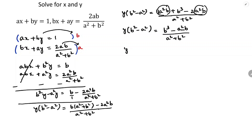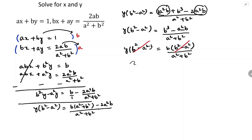So y into b square minus a square equals b square minus a square by a square plus b square — taking b common. Now b square minus a square on both sides will get cancelled, so y equals b by a square plus b square.